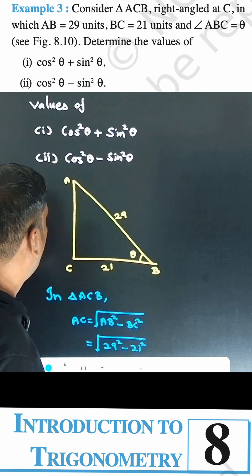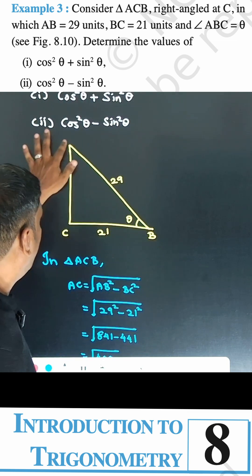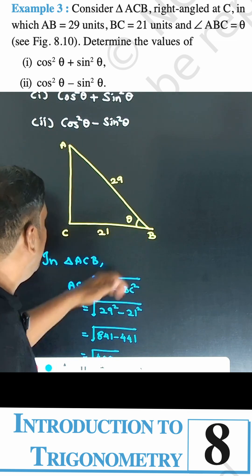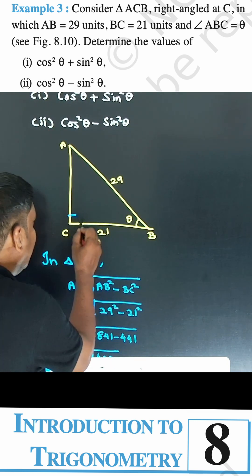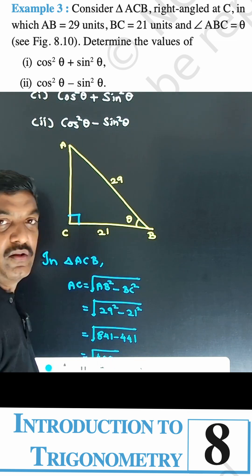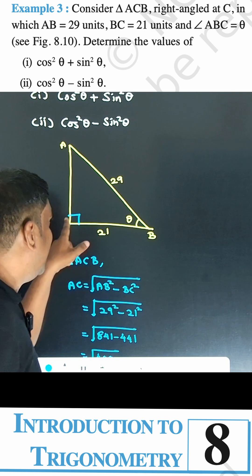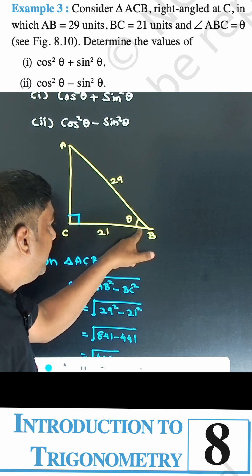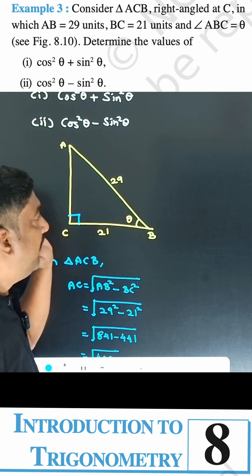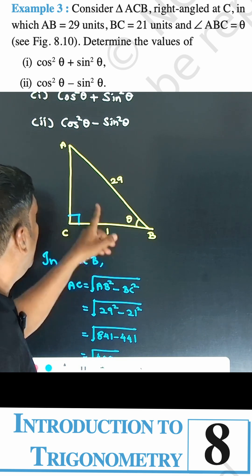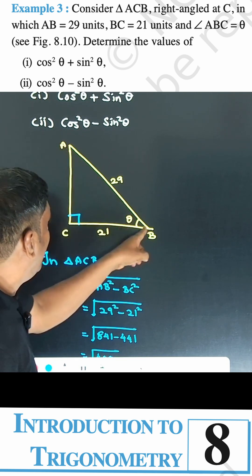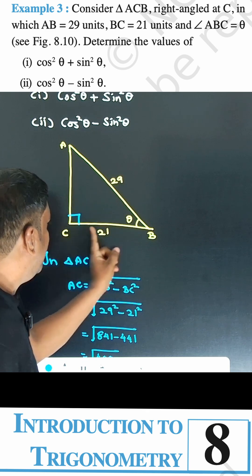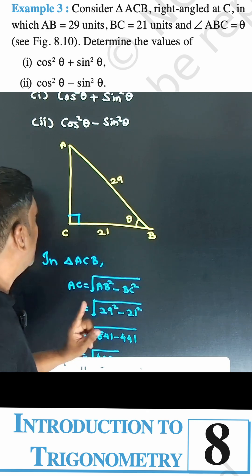First, we draw this triangle. Triangle ACB is right-angled at C, so angle C is equal to 90°. Angle B is equal to theta. AB is equal to 29 and BC is equal to 21.